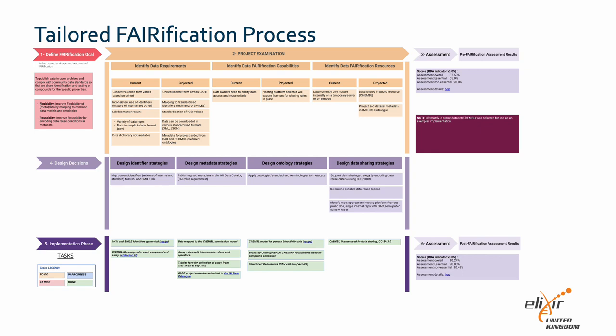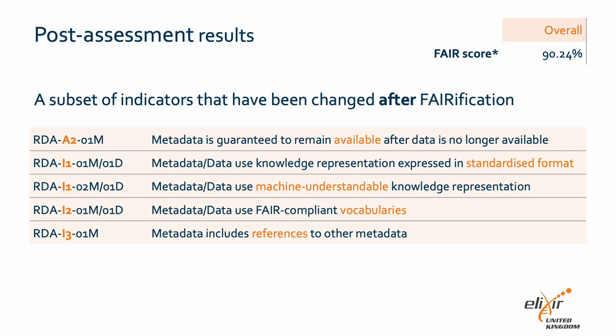The procedure on how to publish bioactivity data on ChEMBL will be added to the FAIR Cookbook recipe for future reuse. Using this set of standards resulted in a post-verification assessment of over 90%. Links to detailed post-assessment results and the verified dataset can be found in the video description. Here is a subset of FAIR indicators that have been changed after the process. For example, after verification, both the metadata and data use knowledge representation expressed in standardized format and are all machine understandable.